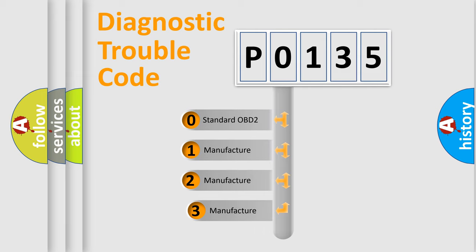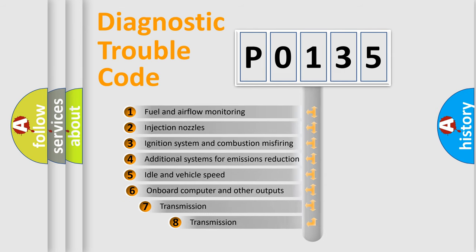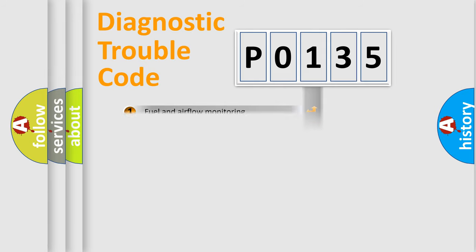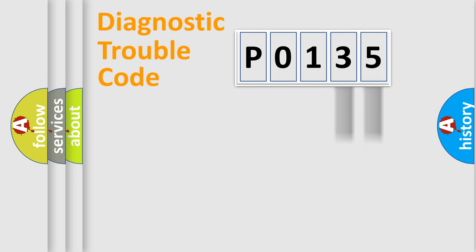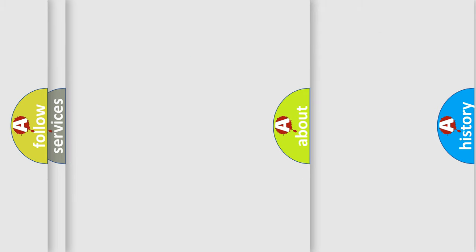If the second character is expressed as 0, it is a standardized error. In the case of numbers 1, 2, or 3, it is a more specific car-specific error. The third character specifies a subset of errors. This distribution is valid only for the standardized DTC code, and only the last two characters define the specific fault of the group — but only when the second character is 0.